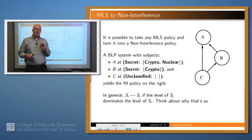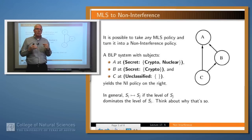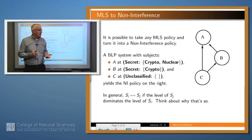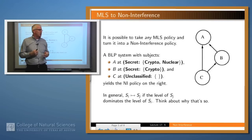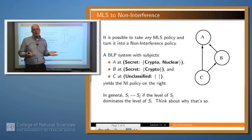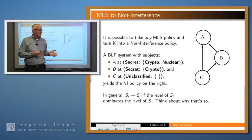A noninterference policy like this is more general than Bell-LaPadula and other types of MLS policies. That means you can take any MLS policy and rewrite it into a noninterference policy. For example, suppose we have a Bell-LaPadula system with three subjects at three labels. Information is allowed to flow from C to A and from B to A because the level of A dominates the levels of B and C. So C can communicate to A, C can communicate to B, and B can communicate to A — that's just a noninterference policy. The rule is that S1 can interfere with S2 if the level of S2 dominates the level of S1.